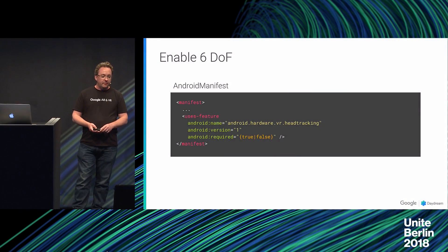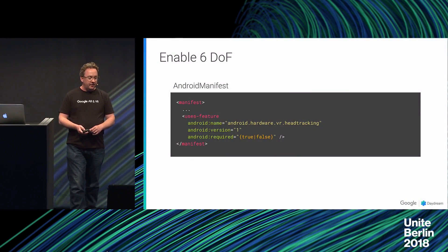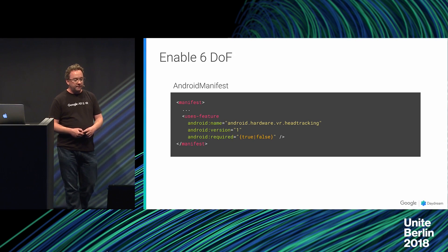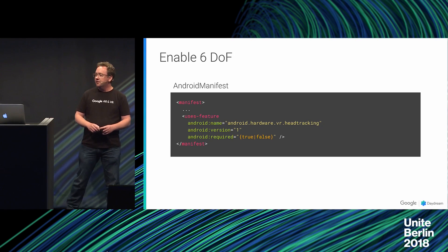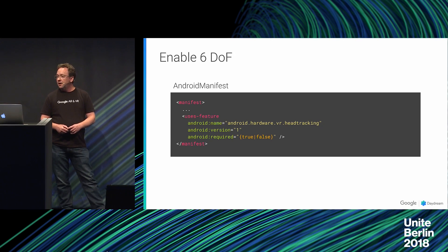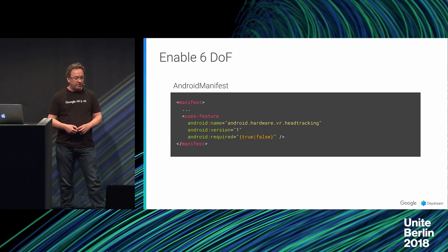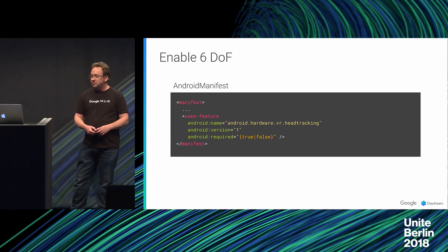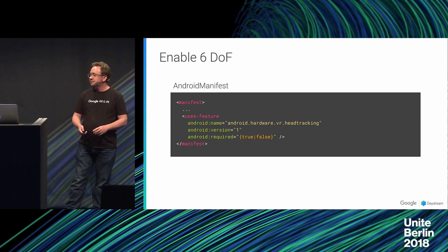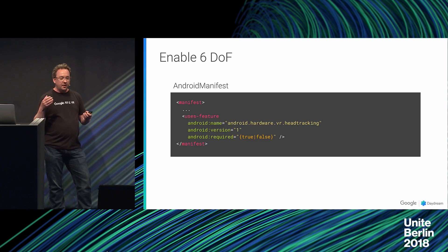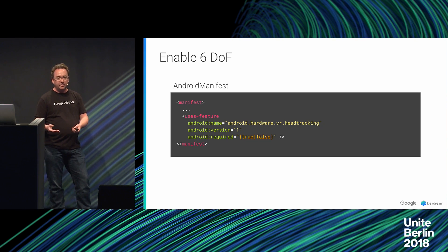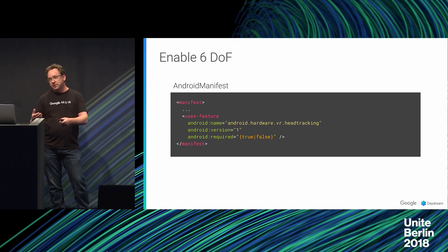Under the covers, Unity is adding a head-tracking feature tag to the Android manifest of your app, and you can see the required flag is set as appropriate as you configure it in the UI. This feature tag is also used by the VR Play Store to filter out app availability should the device not support 3DOF or 6DOF.